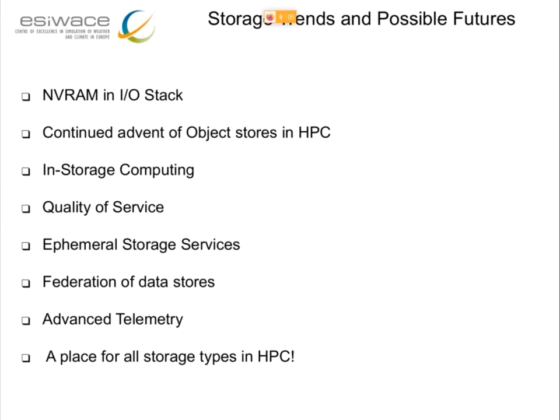We briefly looked at different ways to access data with POSIX. Now let's look at some possible storage trends and futures. NVRAM in the IO stack is the mainstay — it's a very big trend. Storage class memories and non-volatile memories have been a major focus in the last five years. We also see the usage of object stores in HPC. Storage computing is also a big trend — just the cost of moving data from storage to compute and back is very intensive.